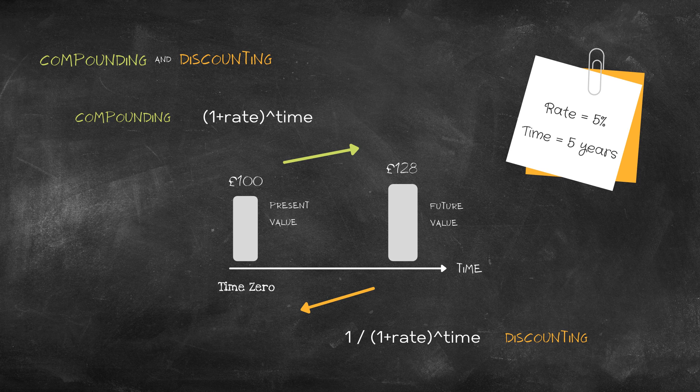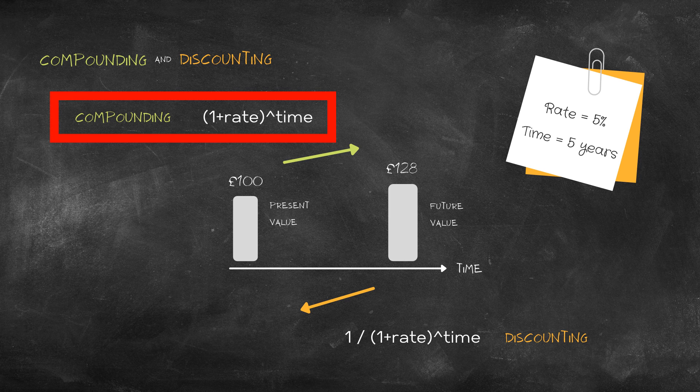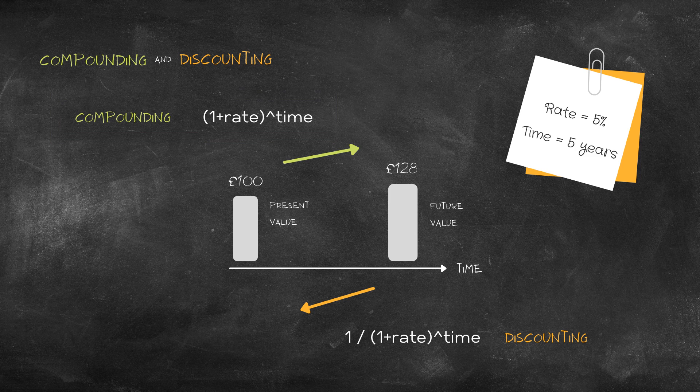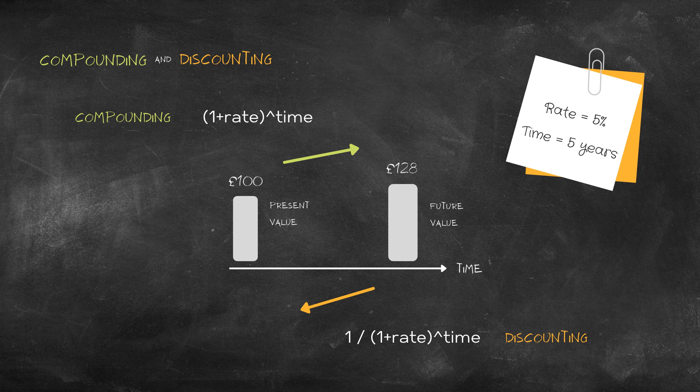And it can help you compare one investment with another. To get from present value to future value is called compounding, and you can use the formula (1 + rate)^time. Multiply a hundred pounds by this formula.